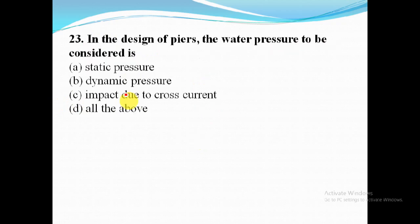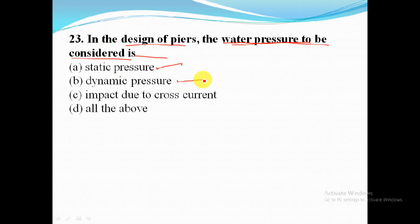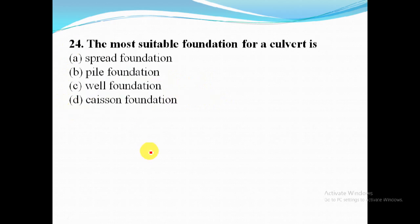In the design of piers, the water pressure to be considered includes static pressure, dynamic pressure, and impact due to cross current. So for this question, option D — all of the above — is the correct answer. The most suitable foundation for a culvert is spread foundation.